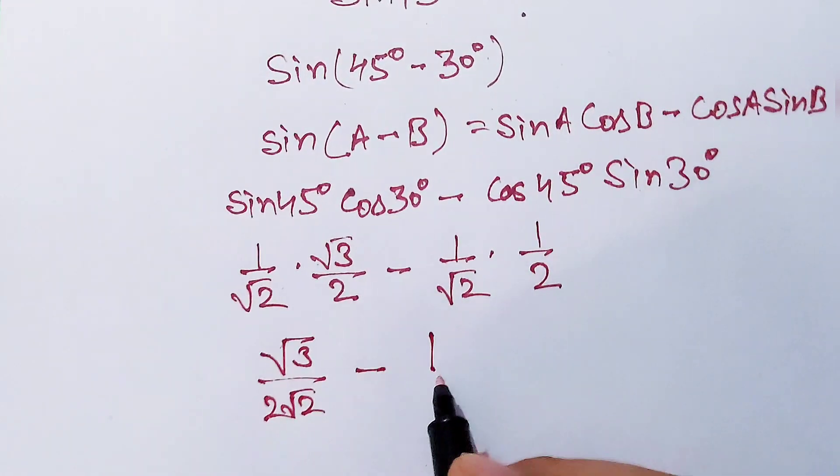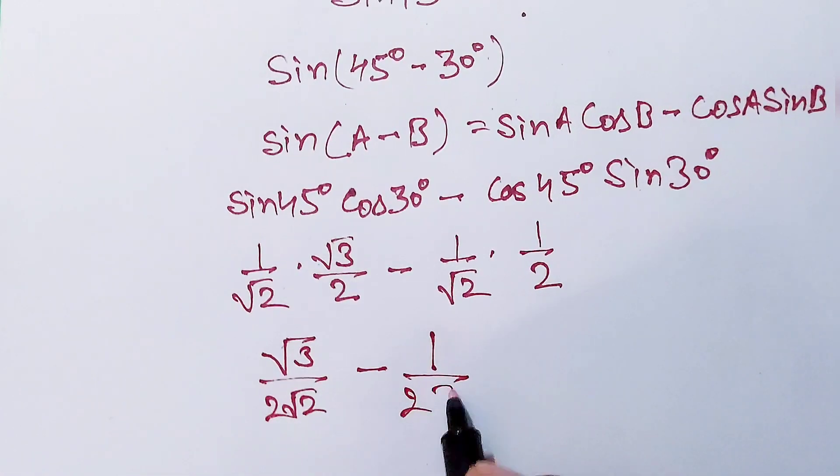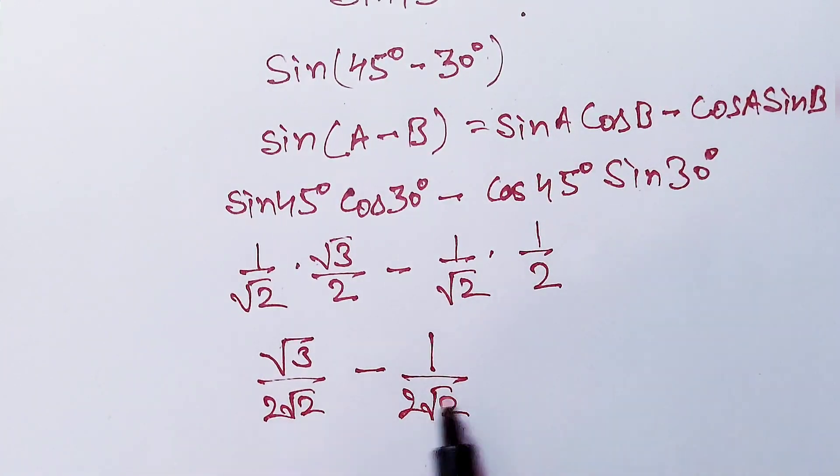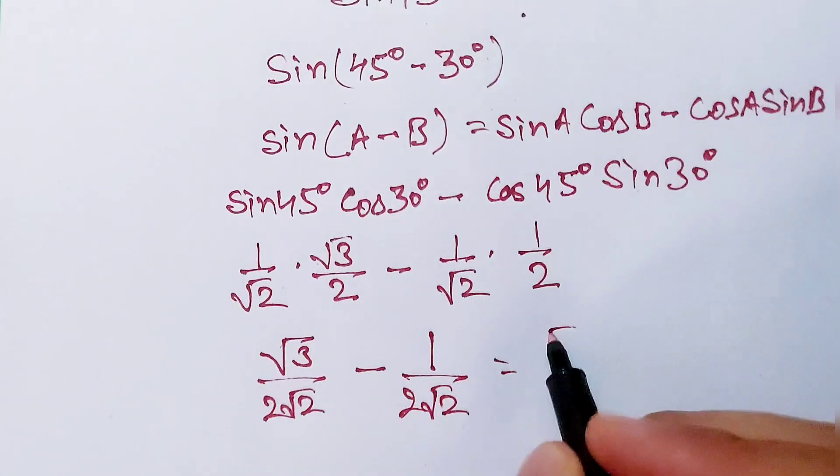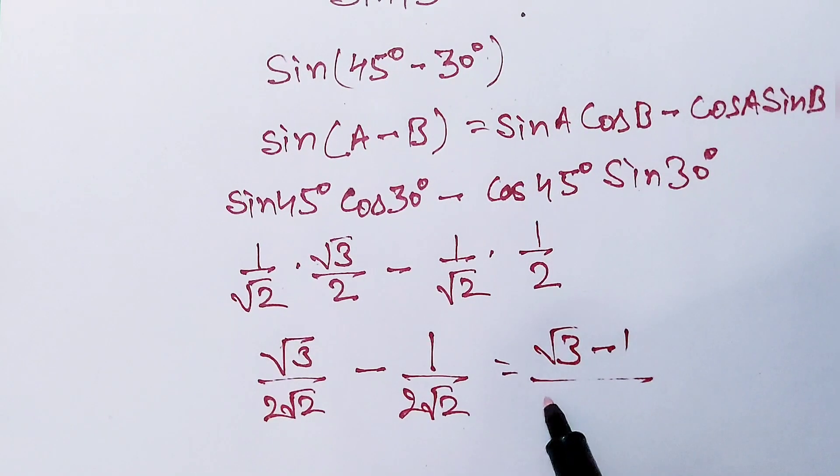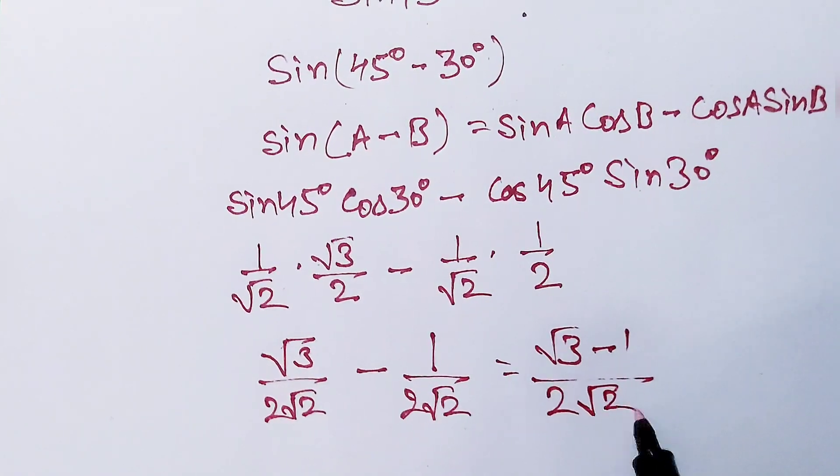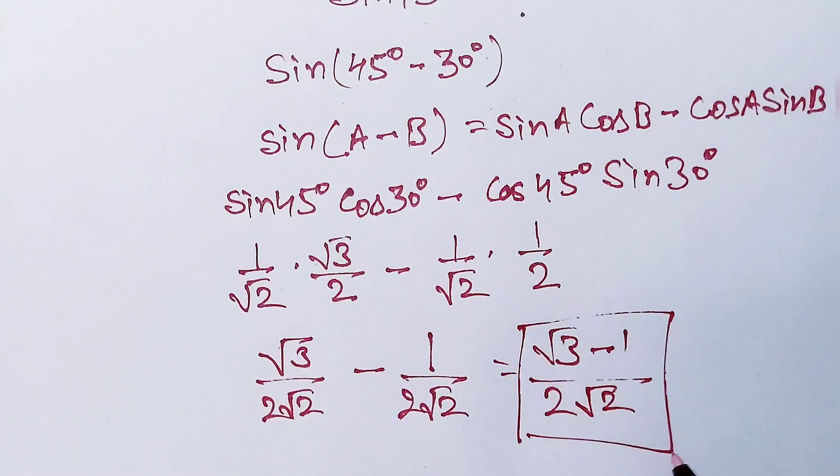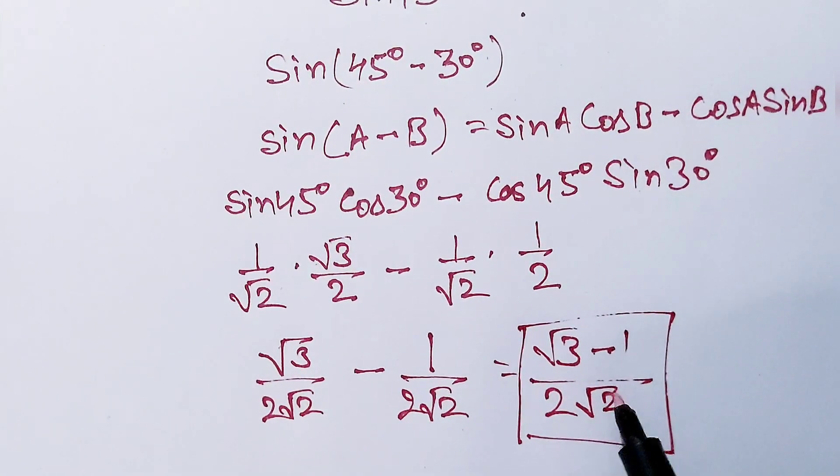Further solving this, what I get is square root of 3 minus 1 over 2 root 2, and that is our final answer. Sine 15 degrees is equal to this value.